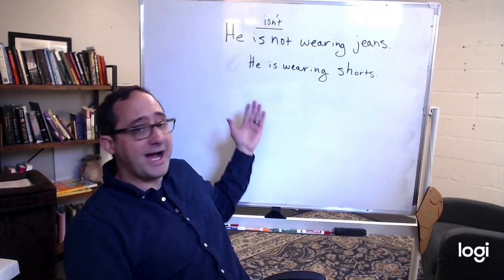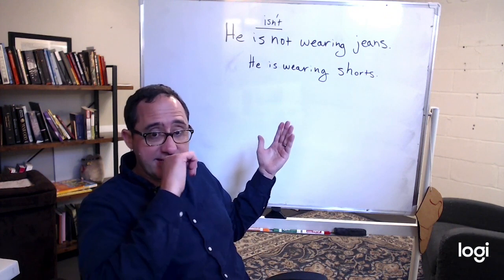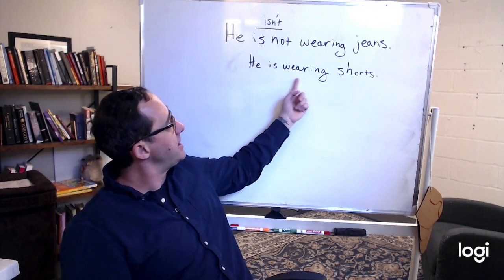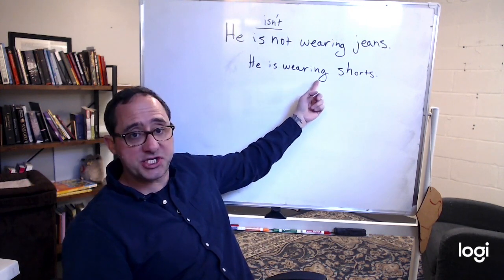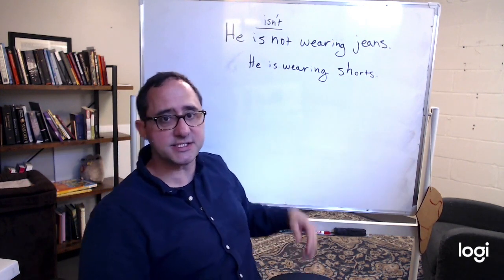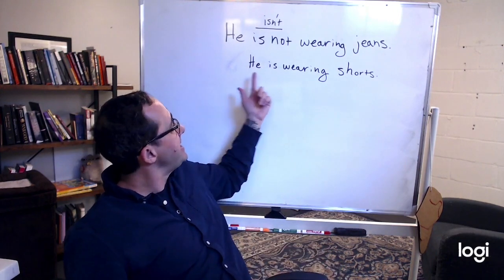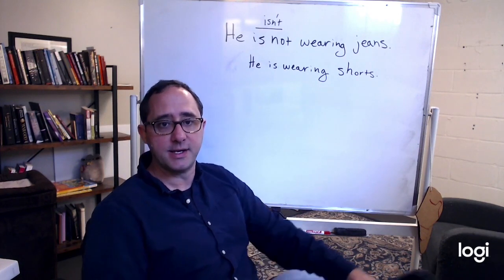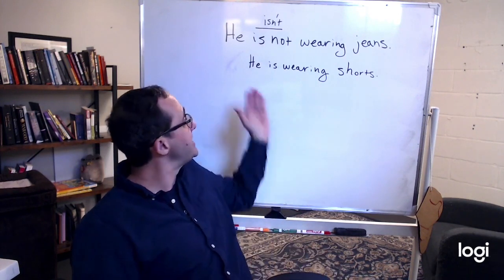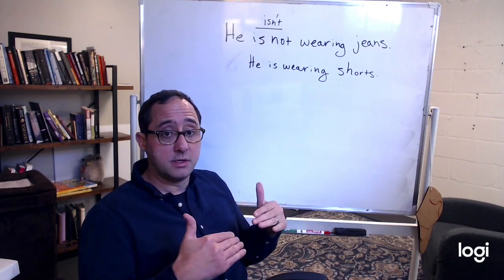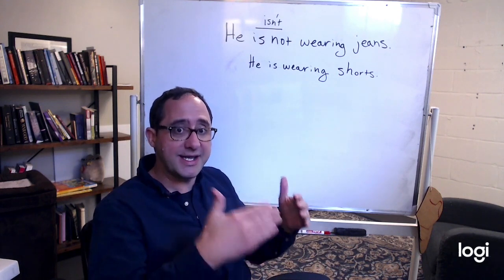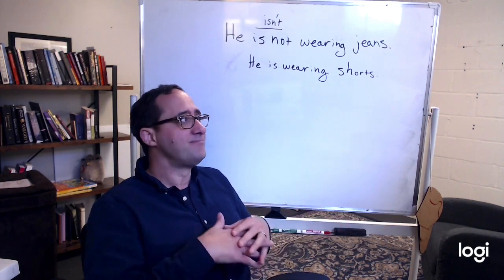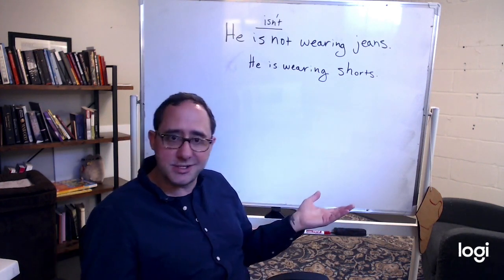So we talked about how to form the present continuous: subject, form of to be, the verb with an -ing, and then the object or the rest of the sentence. So 'he is wearing shorts' — this would be our standard way to make the present continuous. He is wearing shorts. This means right now, or at the time I'm talking about, he is wearing shorts. 'He wears shorts' means in general — usually he wears shorts.